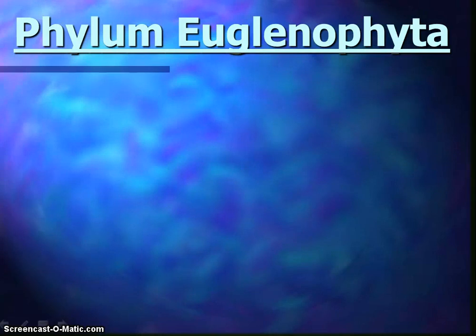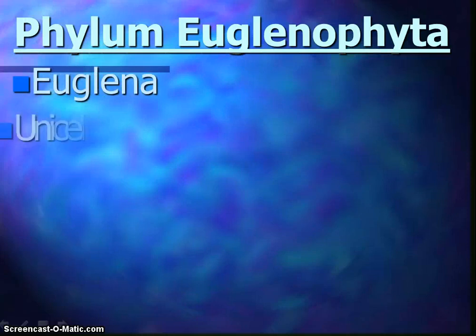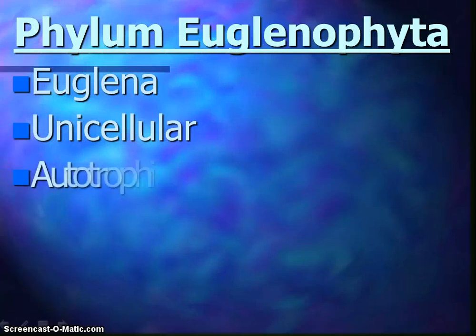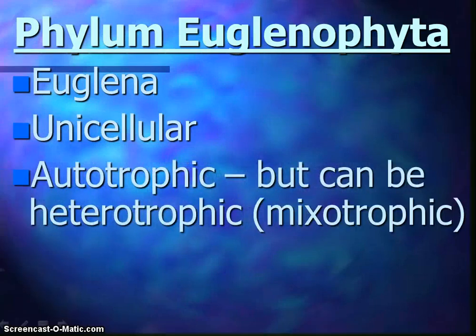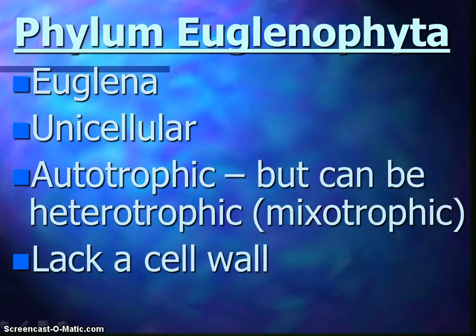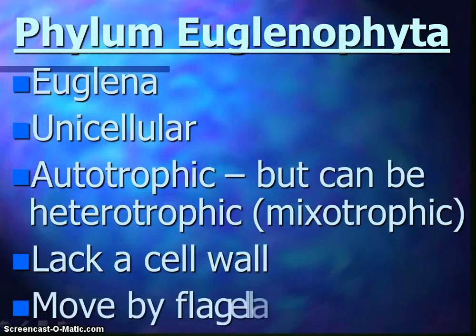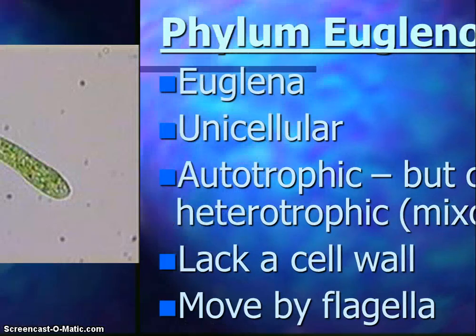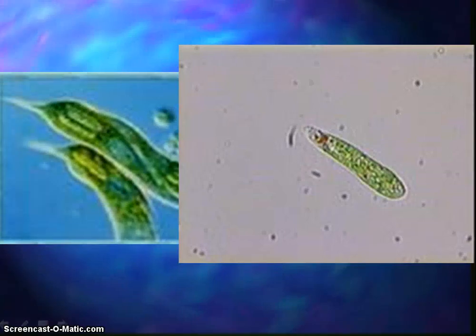Algae all have chlorophyll A, and 75% of the oxygen on Earth is produced by algae. Let's talk about the euglena, phylum Euglenophyta. This is a unicellular algae that has characteristics of both plants and animals. They are autotrophs; however, if exposed to a period of darkness, they can become heterotrophs — so we call this a mixotroph. They don't have a cell wall. They do have a contractile vacuole to control water, and they have an eye spot — a photoreceptor at the base of the flagella that helps sense the direction of the light source, allowing the organism to swim toward or away from light to reach the optimum brightness. They move by flagella, and we will look at euglena in class.